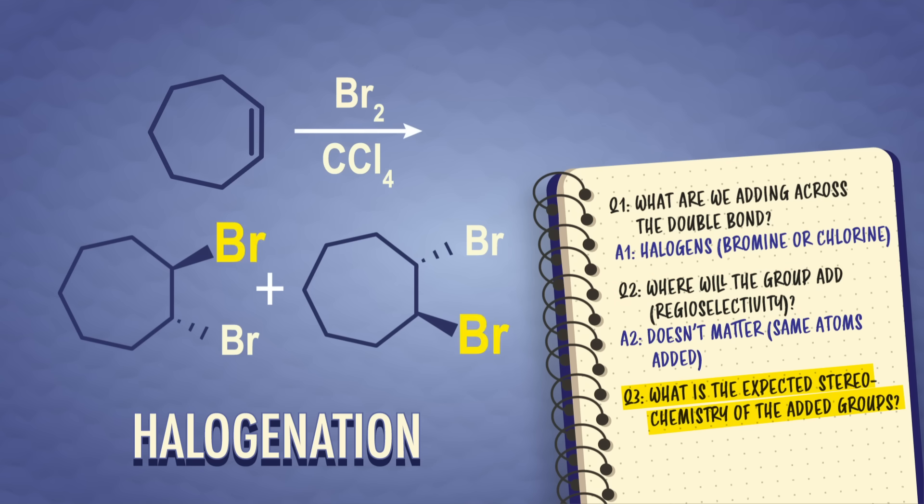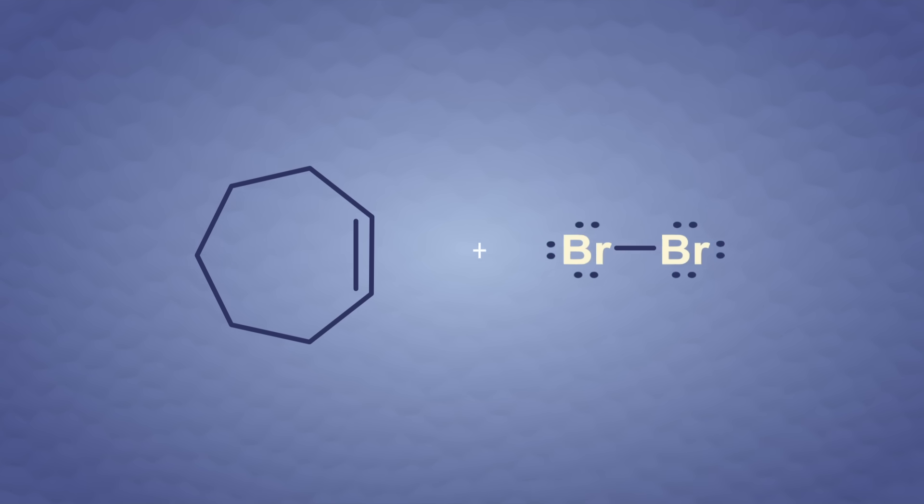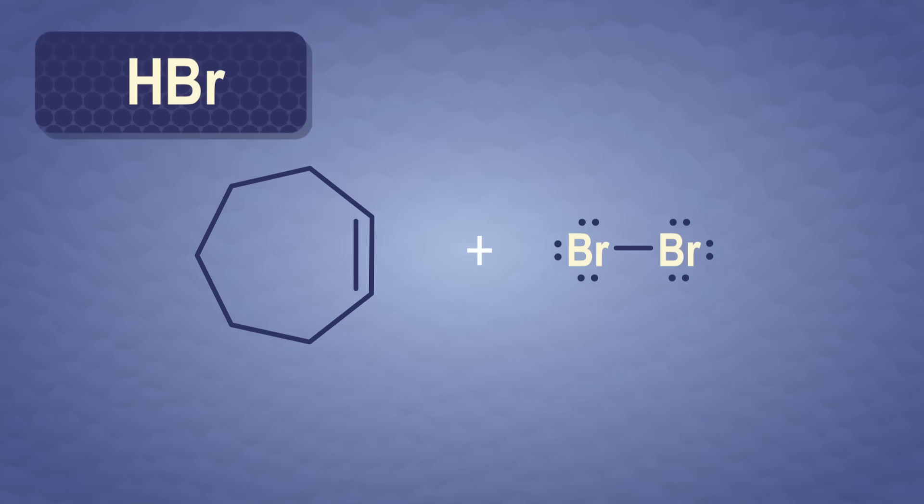And for question number three, see that one bromine adds to the top of the ring and one bromine adds to the bottom of the ring, so this is anti-addition. We've got to step through the reaction to understand why this happens. Let's look at the mechanism of cycloheptane with molecular bromine. HBr is a strong acid and completely dissociates in water. This means that bromide, Br-, is pretty stable on its own, so the nucleophilic alkene can attack bromine.